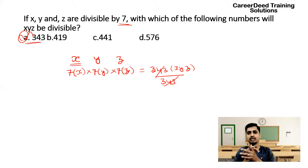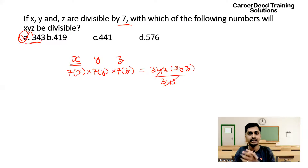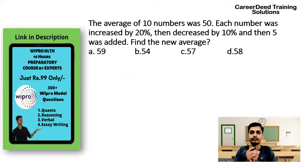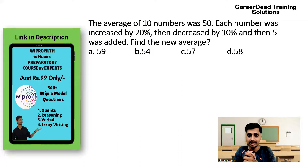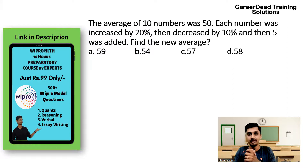This is also one question that was asked in last year's Wipro NLTH. Now question number 3: the average of 10 numbers was 50. Each number was increased by 20 percentage, then decreased by 10 percentage, and then 5 was added. Find the new average.